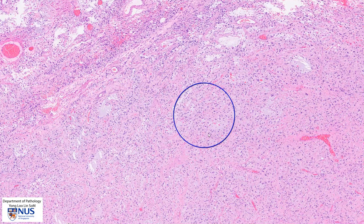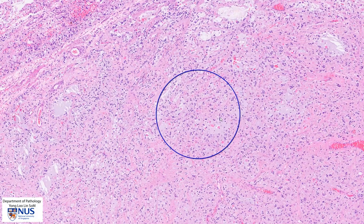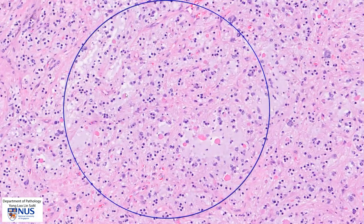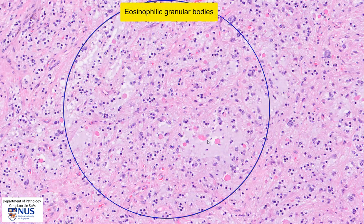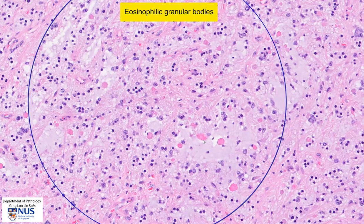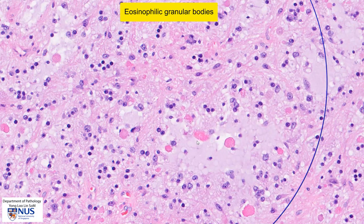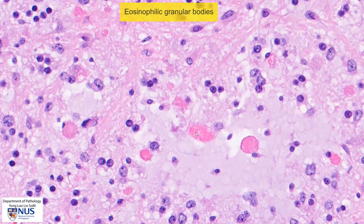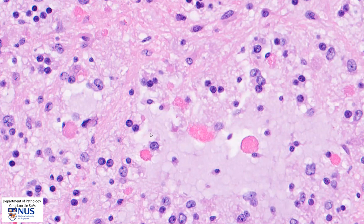In this region, I would like to draw your attention to a structure that is quite commonly seen in pilocytic astrocytomas. There are many of these rounded eosinophilic structures here, known as eosinophilic granular bodies, and they are thought to be possibly a degenerative phenomenon. These are quite frequently seen in pilocytic astrocytomas. On high magnification, you can see that they are indeed granular with an eosinophilic appearance — rounded and of variable sizes.